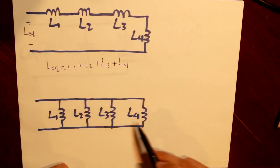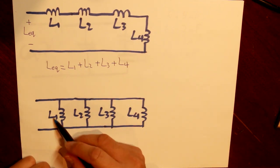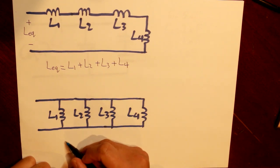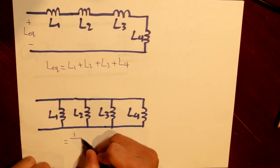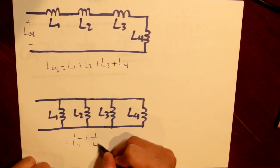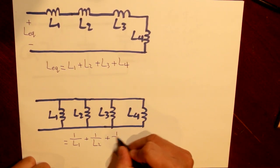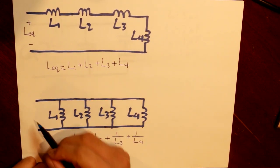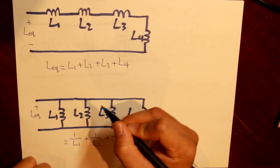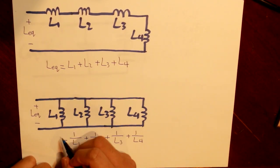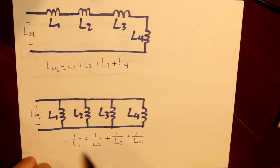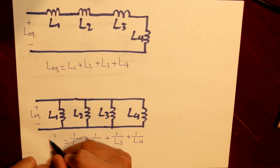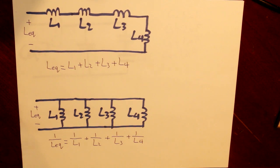For inductance in parallel, our inductor values go in the denominator. Our equivalent inductance is the inverse of all four terms added up together — so you add those terms and then divide to get the equivalent inductance.